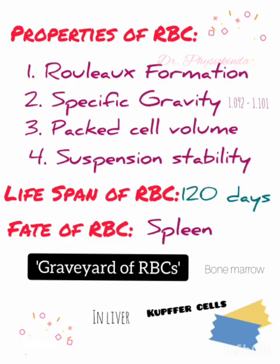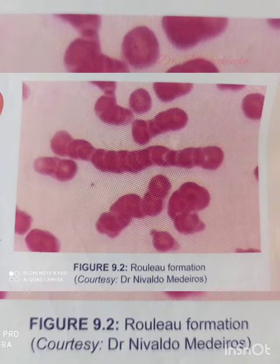The main properties of RBCs are Rouleaux formation, specific gravity, packed cell volume, and suspension stability. Regarding Rouleaux formation: when blood is taken out of a blood vessel, RBCs pile up one above another like a pile of coins. This property of RBC is called Rouleaux formation. It is accelerated by plasma proteins, globulin, and fibrinogen.